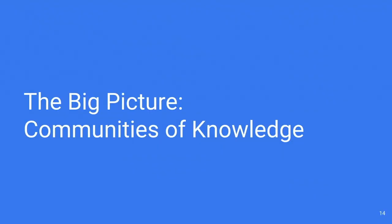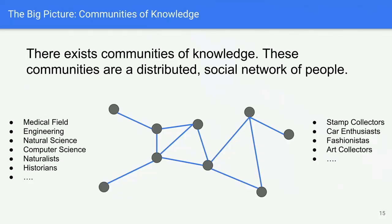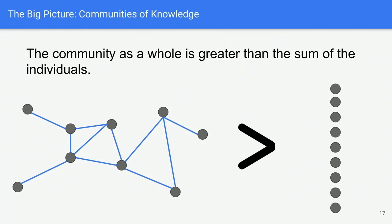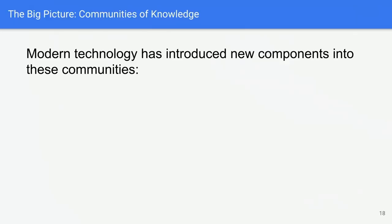I want to start with the big picture. There exist communities of knowledge — distributed social networks of people. Examples include engineering, the natural sciences, stamp collectors, car enthusiasts, and most iconically the medical field, where doctors specialize and reach out to colleagues when they encounter something outside their area. An important aspect of these communities is that collectively they are greater than the sum of their individuals — the collective knowledge held in the network exceeds the individuals themselves.